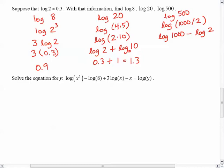I could rewrite 1000 as 10 cubed. And then that's just 0.3. And so the 3 can go to the front. And log of 10, as we just said, was 1. So this is just 3 minus 0.3, so 2.7.